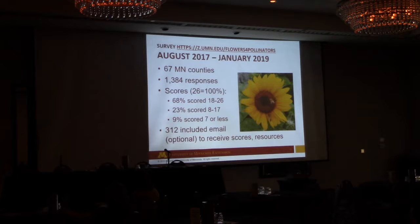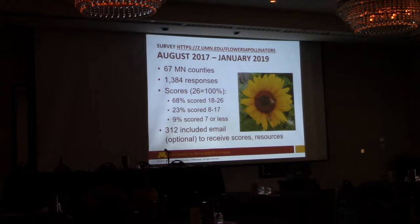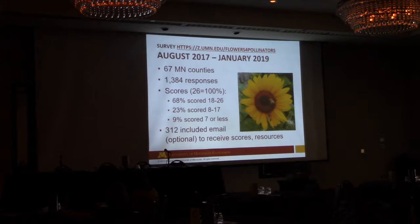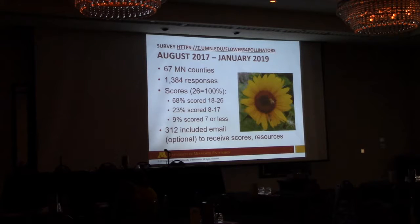When people took the Qualtrics survey they actually got a score at the end. The scores were divided into three levels — the highest was 'Pollinator Protector,' scoring 18 to 26 (26 being the highest). When they scored and put in their email at the end, they got a printout of their answers and the correct answers or recommendations, plus a whole bunch of resources geared toward that level. If they scored 24 out of 26, they got higher-level resources; somebody scoring seven or less got more basic resources to get them started.